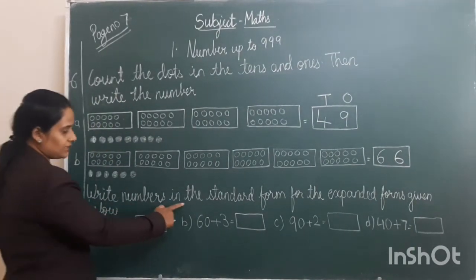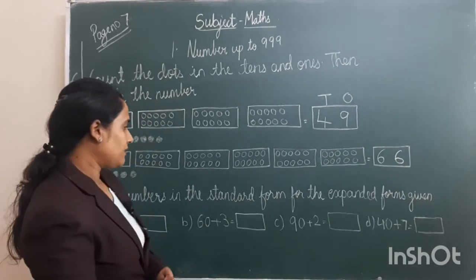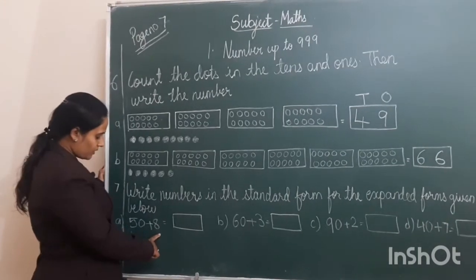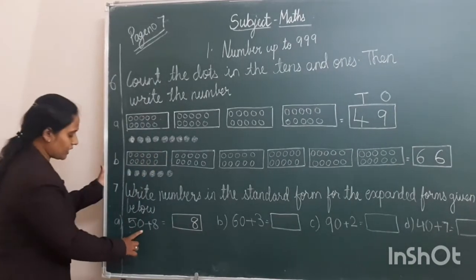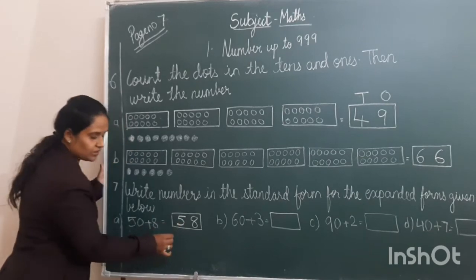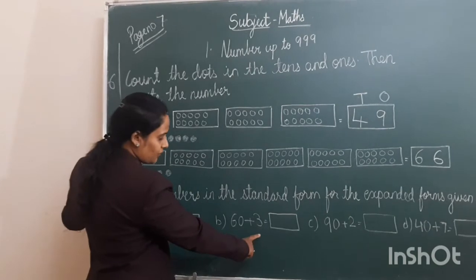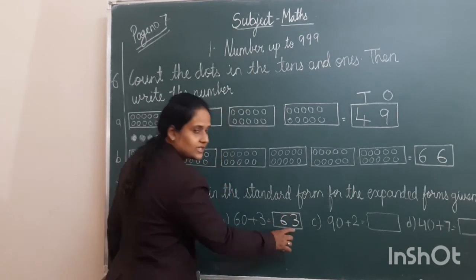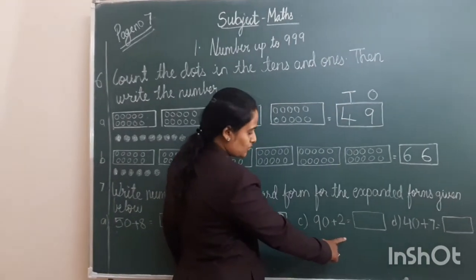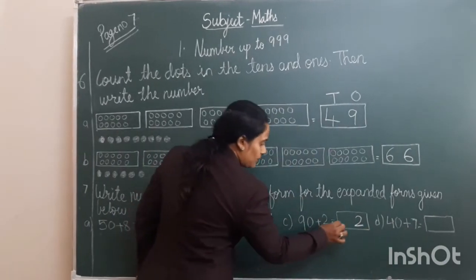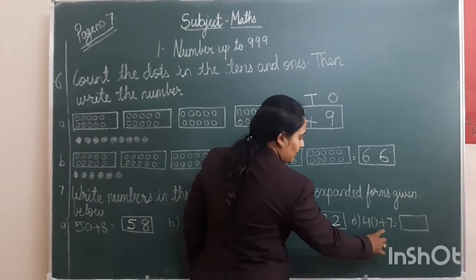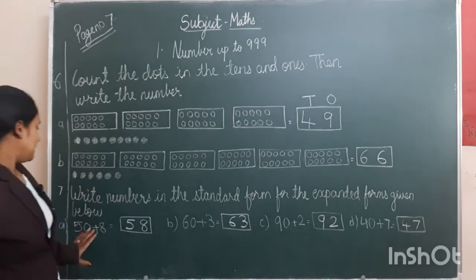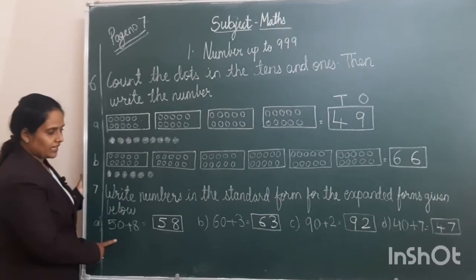Now question number 7: write the number in the standard form for the expanded forms given below. The expanded form is 50 plus 8 — at 1s place 8, and the value of 50 at 10s place is 5, so the answer is 58. Again, 60 plus 3 — at 1s place 3, and 60's value is 6, so 63. Third: 90 plus 2 — at 1s place 2, 90 becomes 9, so 92. Then 40 plus 7 — at 1s place 7, value of 40 is 4, so the answer is 47.